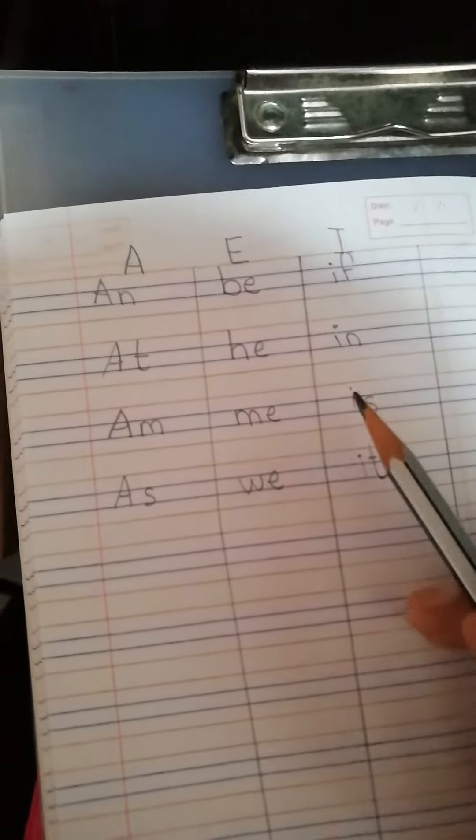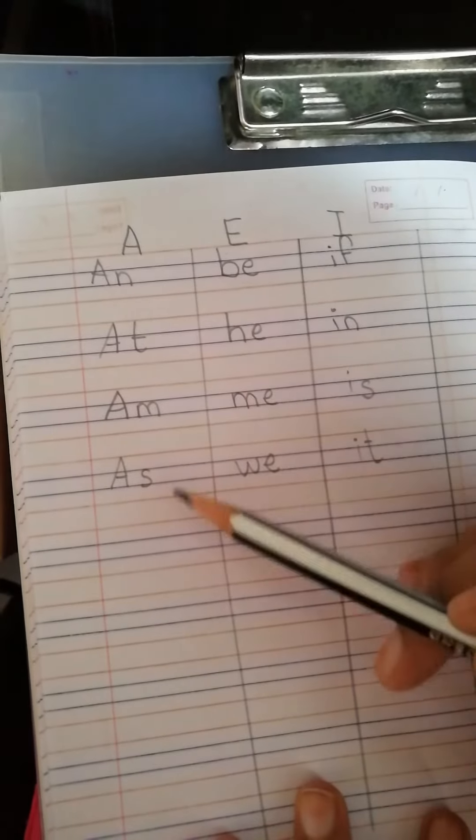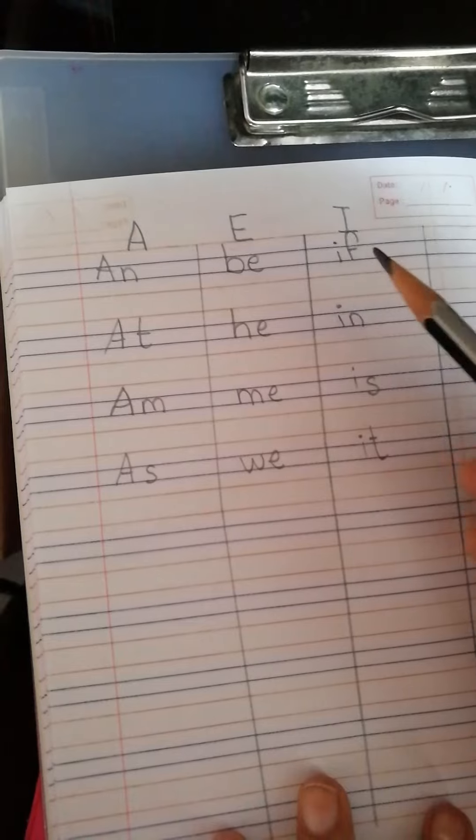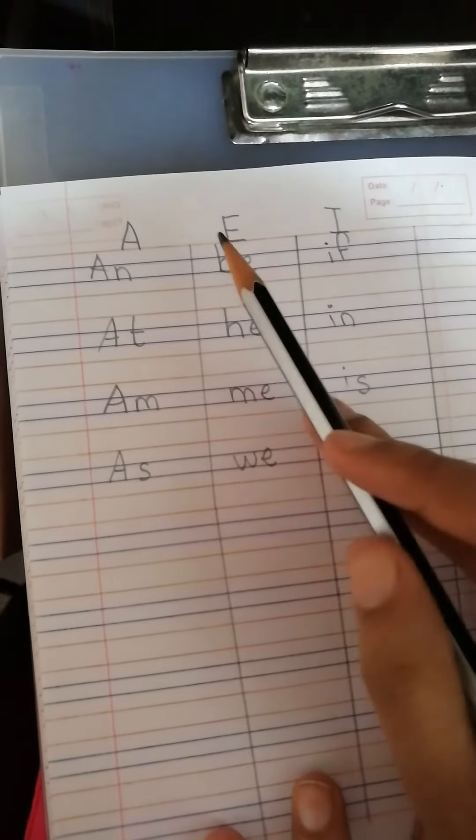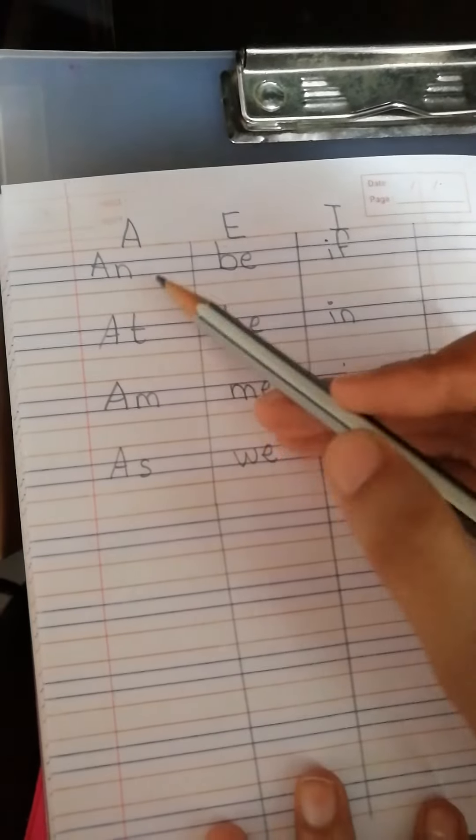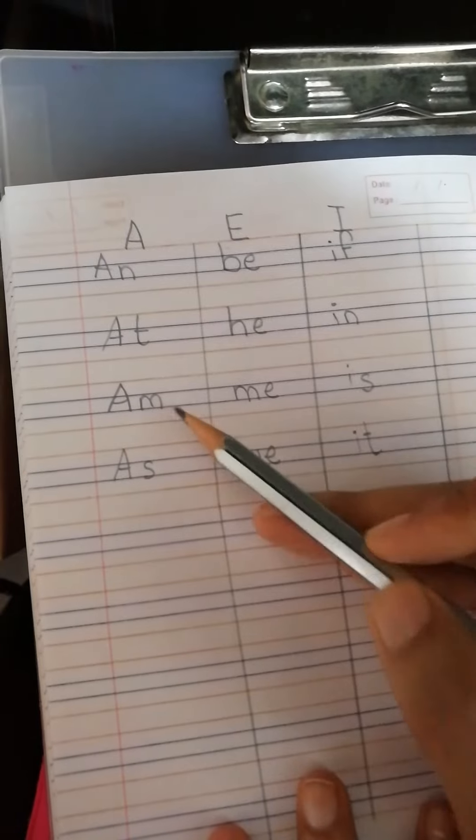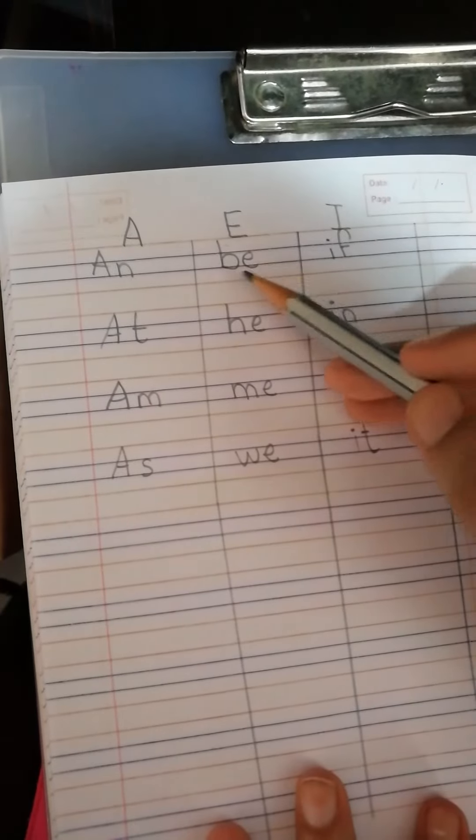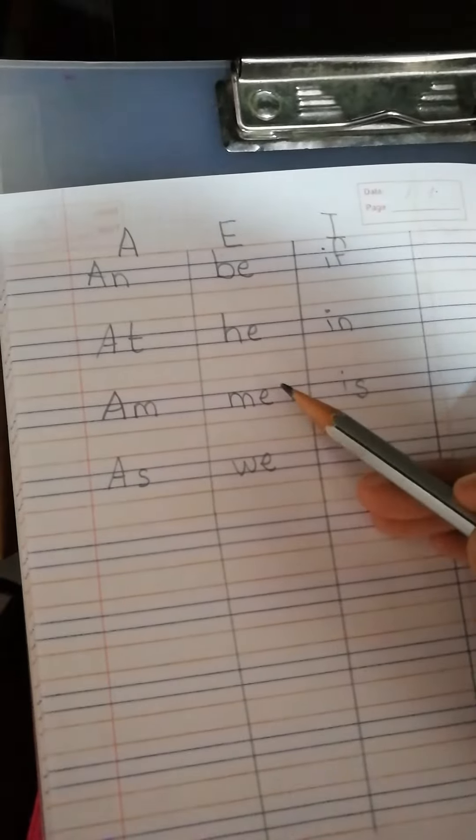Let us quickly revise the two-letter VC and CV words which have got the vowel A, E, and I in it. An, at, am, as. Be, he, me, we.